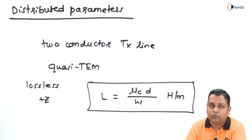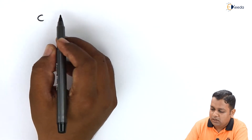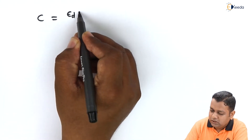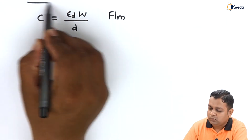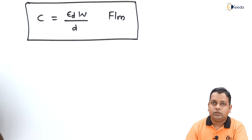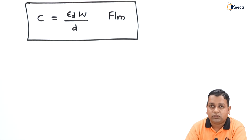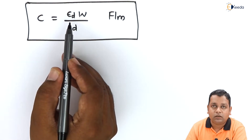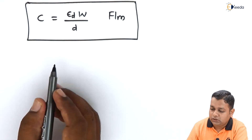In the inductance equation, the suffix 'c' on mu denotes the conductive portion of the parallel strip line structure. Next, the capacitance between the two conductive strips is C = epsilon-suffix-d times w divided by d, measured in farads per meter. Here, epsilon-suffix-d refers to the permittivity or dielectric constant of the dielectric material, not the conductive material.